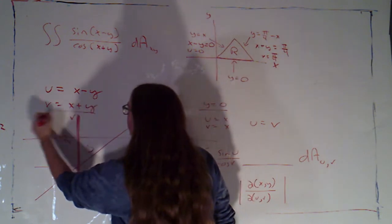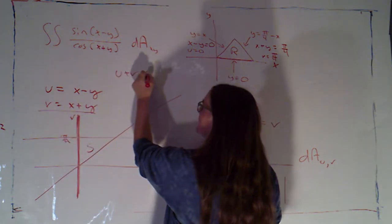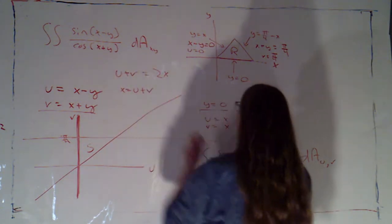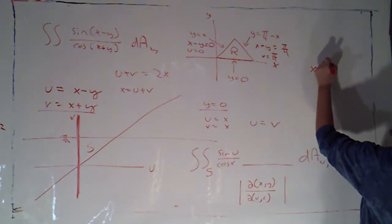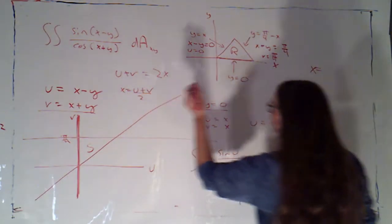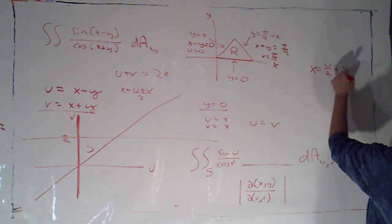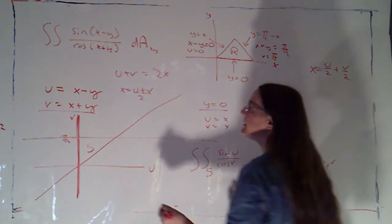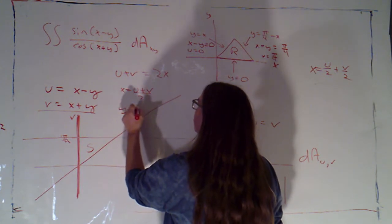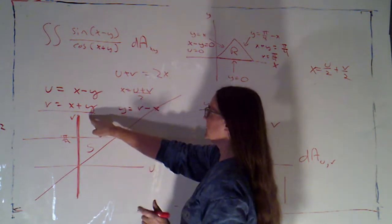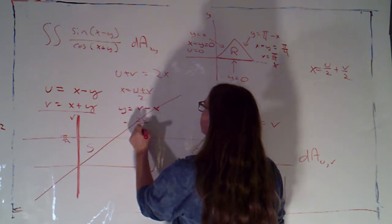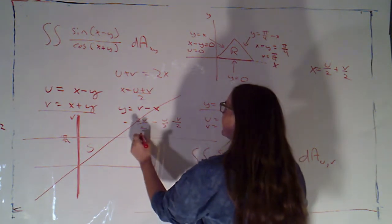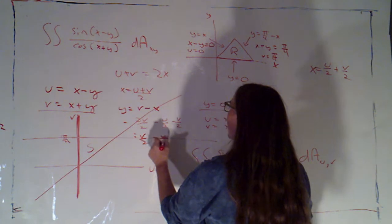So I'm just going to add them. Adding u plus v gives 2x because the y's drop out, so x equals u plus v over 2, which I'll write as u over 2 plus v over 2. I can use that to solve for y: y is v minus x, so that's 2v over 2 minus u over 2 minus v over 2, giving y equals v over 2 minus u over 2.